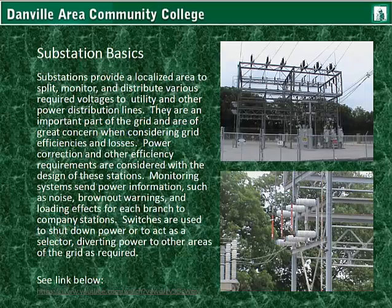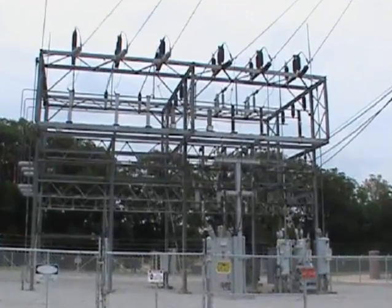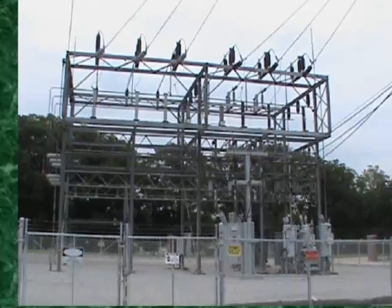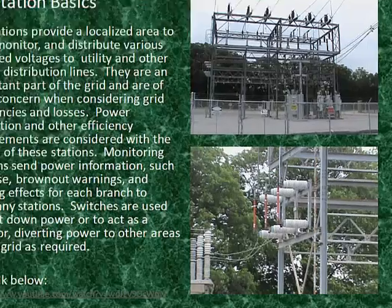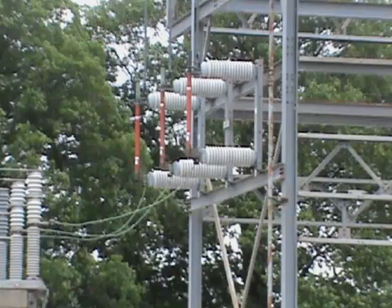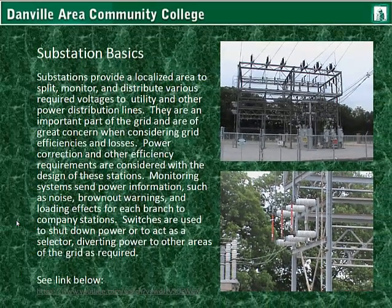Substations provide a localized area to split, monitor, and distribute various required voltages to utility and other power distribution lines. They are an important part of the grid and are of great concern when considering grid efficiencies and losses. Power correction and other efficiency requirements are considered with the design of these stations. Monitoring systems send power information such as noise, brownout warnings, and loading effects for each branch to company stations. Switches are used to shut down power or to act as a selector, diverting power to other areas of the grid as required.